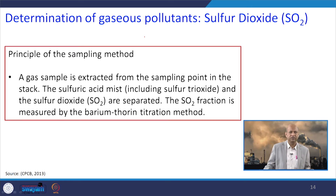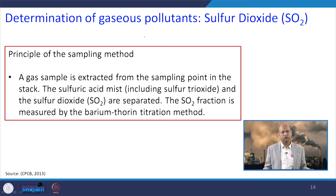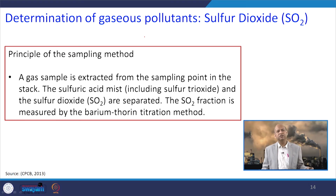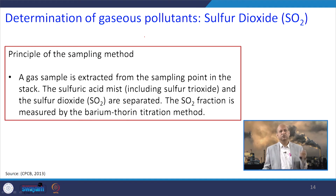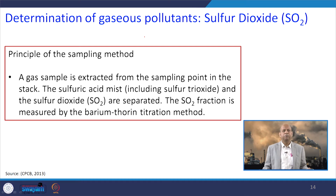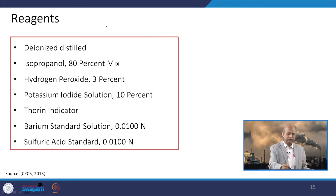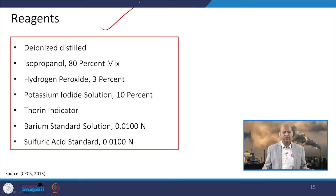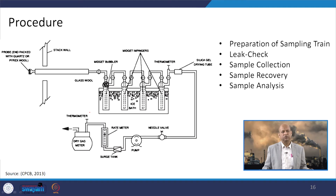This device can also be used for monitoring gaseous pollutants by using impingers. For SO2, gas sampling is done through extraction from the sampling point using the probe in the stack. In this case, sulfuric acid mist including sulfur trioxide and sulfur dioxide are separated to avoid error. The SO2 fraction is measured by the barium thorin titration method. Reagents used include deionized distilled water, isopropanol, and 3% hydrogen peroxide.